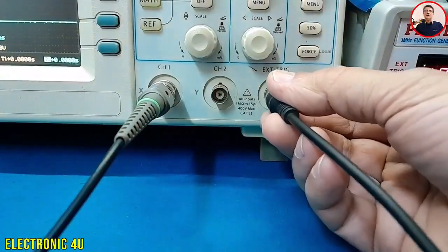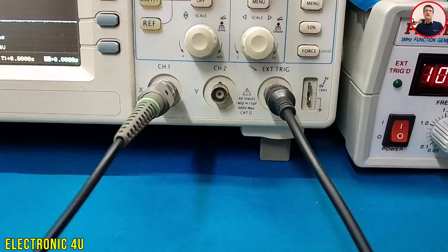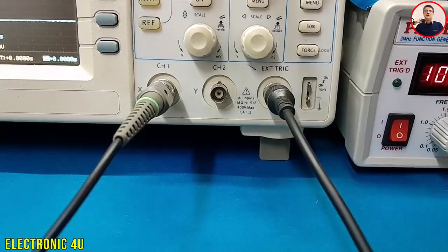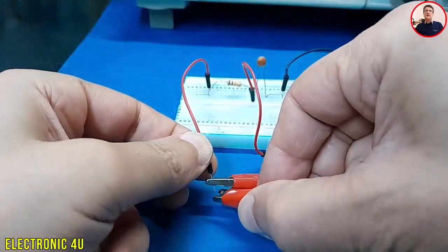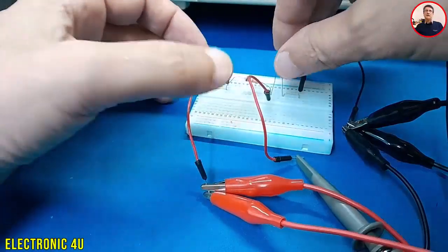At the same time, I'll connect another line from that same square wave directly to the external trigger input on the scope. Finally, I'll connect the circuit output, the voltage across the capacitor, to channel 1.